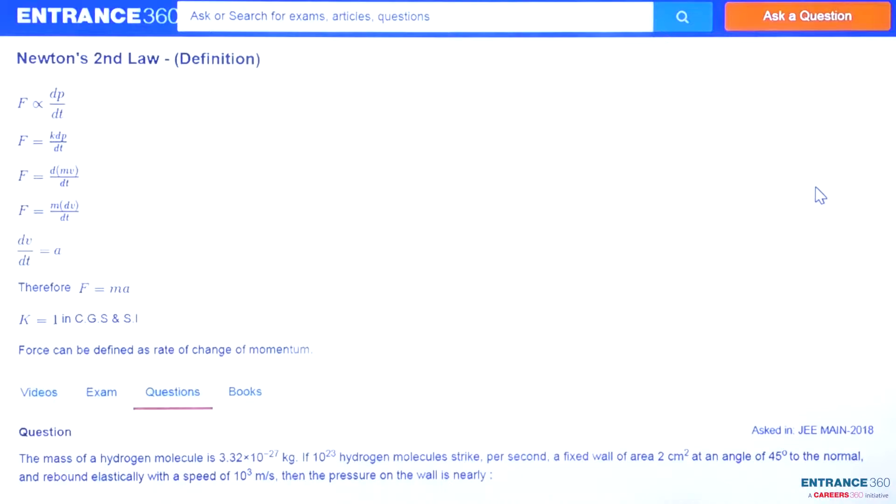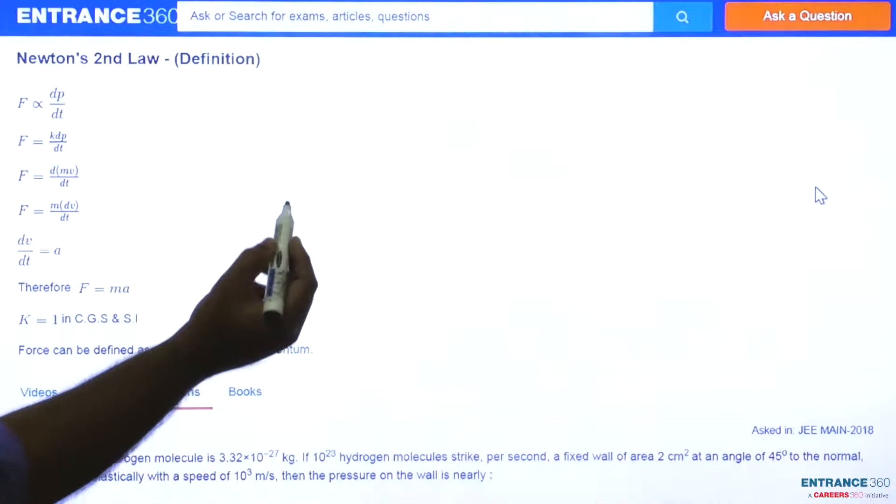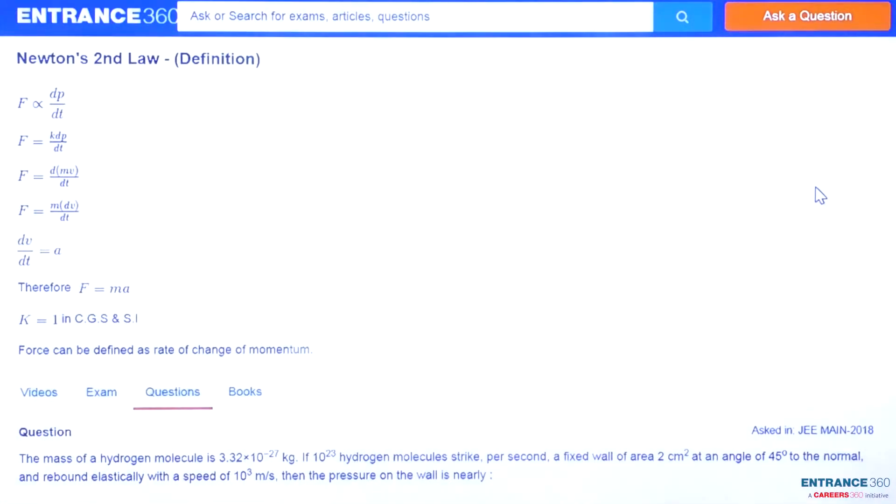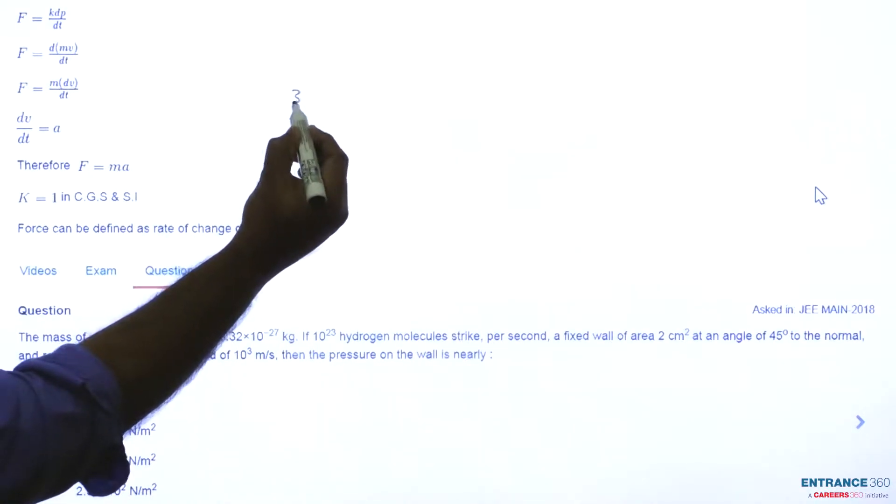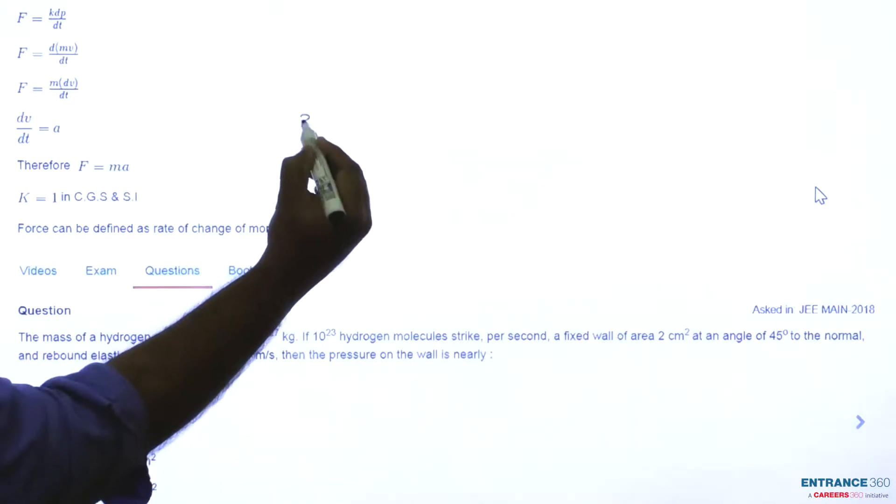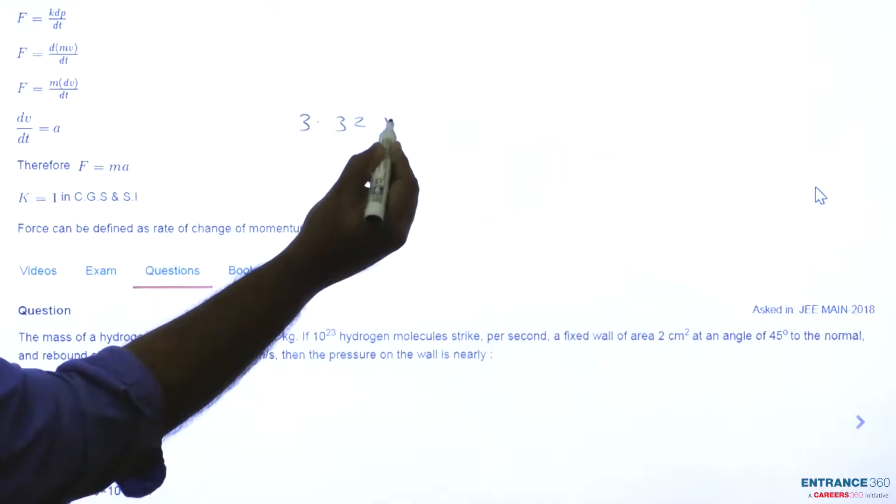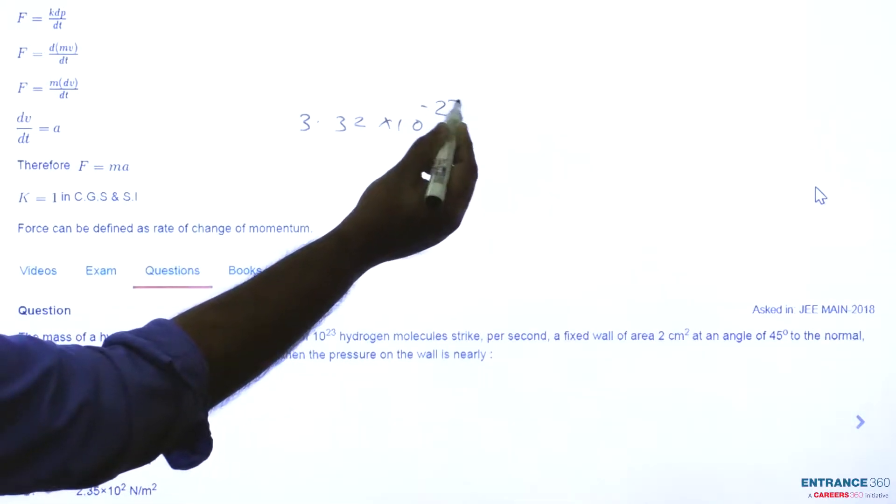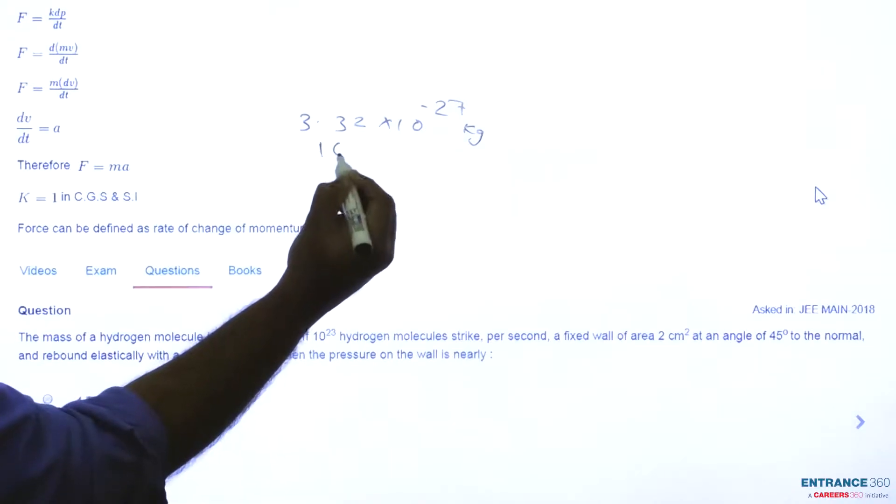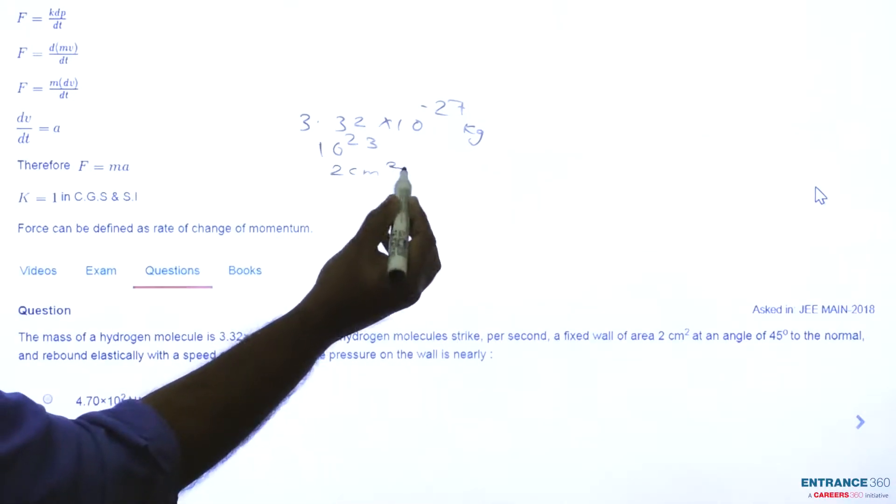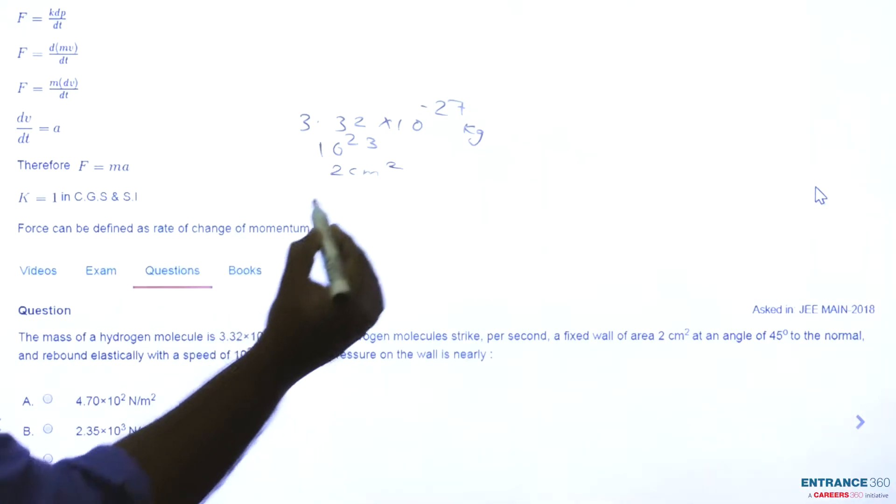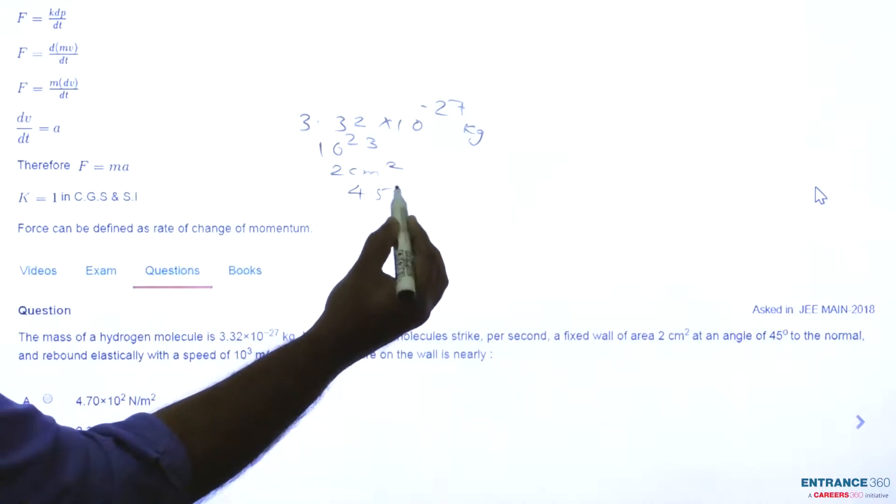Given: mass of hydrogen molecule is 3.32 × 10^-27 kilograms, number of hydrogen molecules is 10^23, area of wall is 2 cm², hitting at angle 45 degrees.